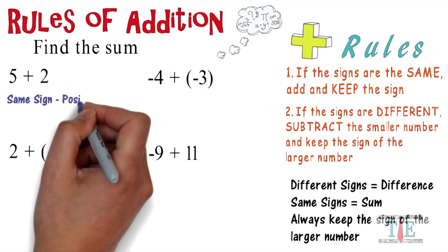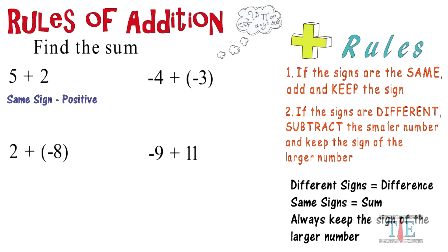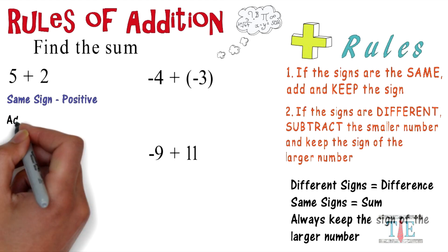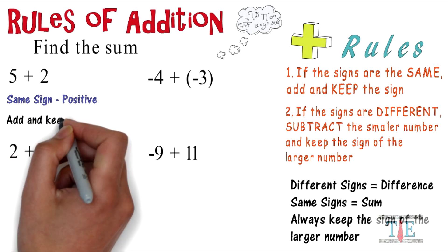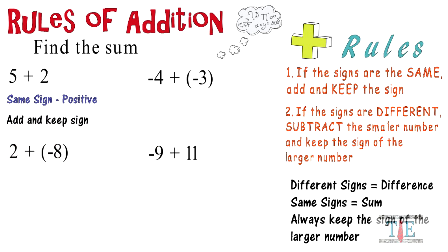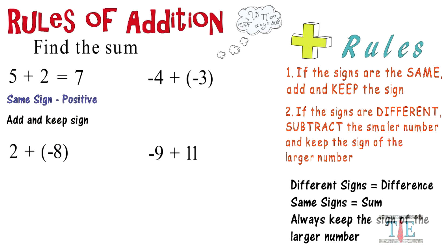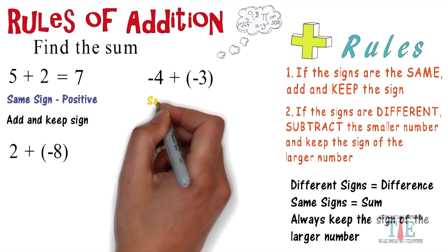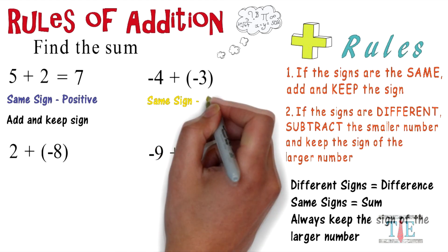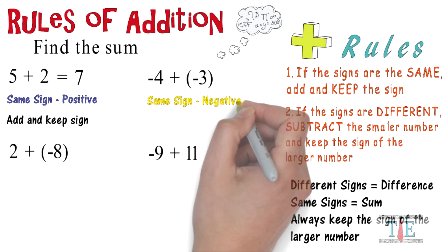Five plus two: they both have the same sign, positive. Therefore let's add and keep the sign, the positive sign. Five plus two equals seven, and we'll keep the positive. Next one: negative four plus negative three. Same sign, both negative.